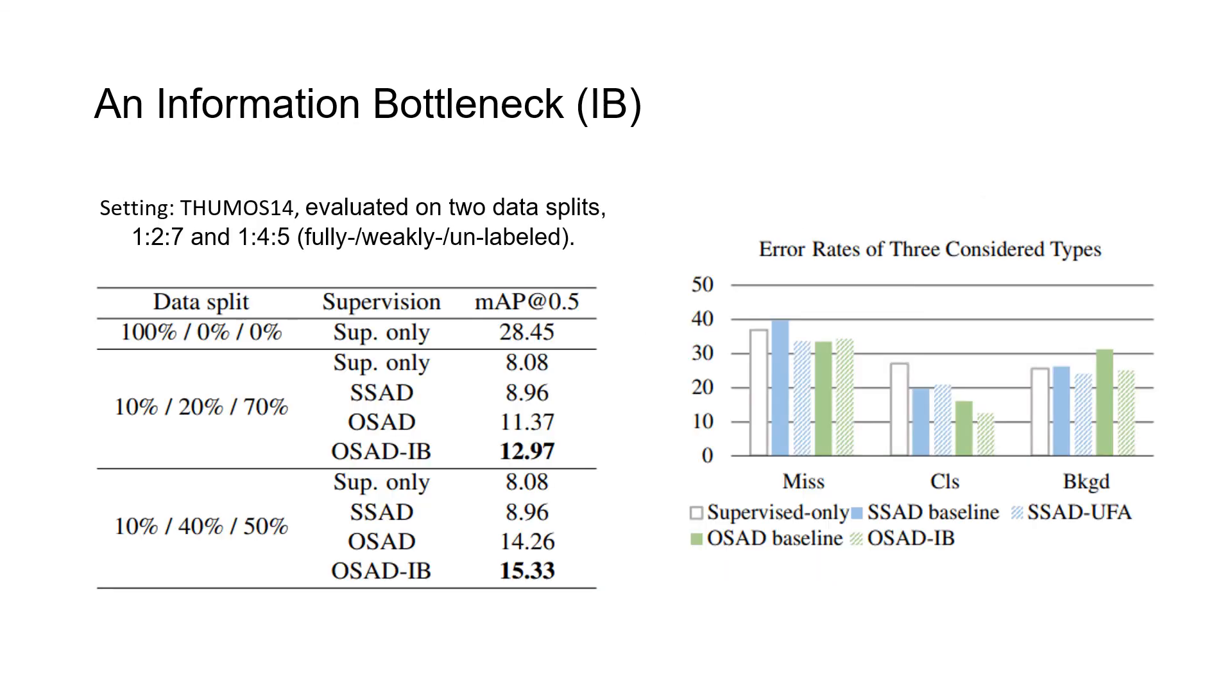In the experiments, we can see that the proposed information bottleneck is helpful for the detection performance and reduces the error of the action context confusion.